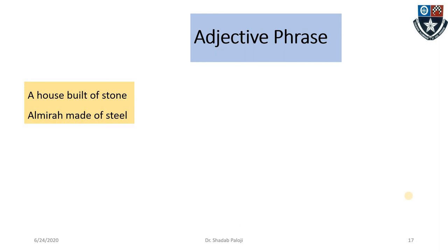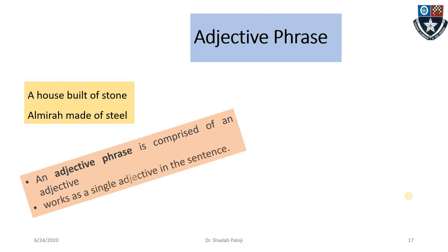Next type: adjective phrase. 'A house built of stone,' 'almirah made of steel.' These are adjective phrases because they talk about the quality of a noun. 'What kind of house? A house built of stone.' Why is it a phrase? Because 'a house built of stone' gives incomplete information — where we live, then the statement would be complete. An adjective phrase comprises an adjective and works as a single adjective in the sentence.